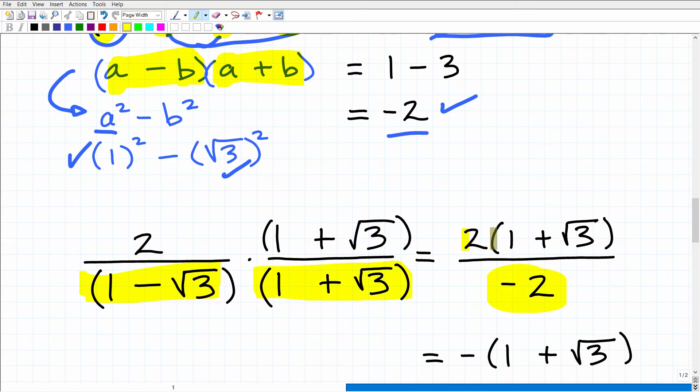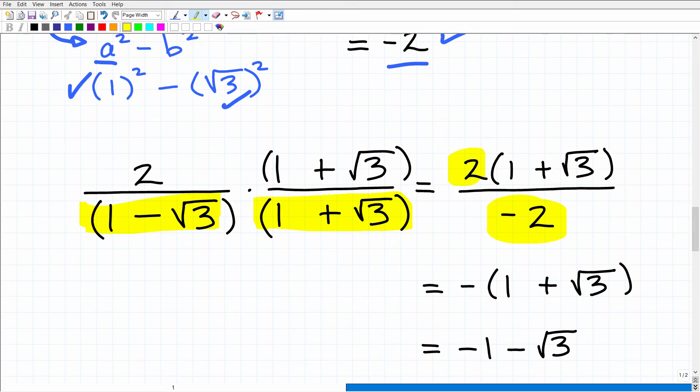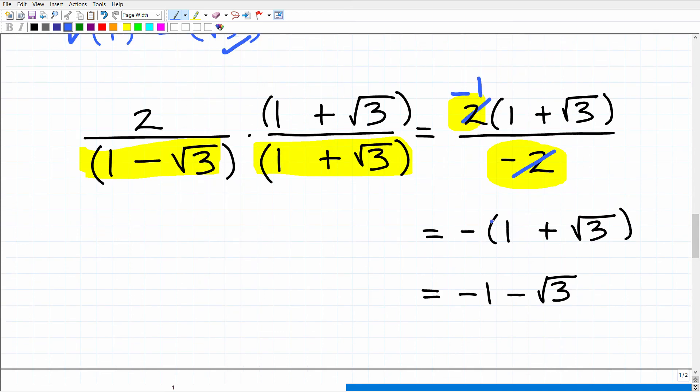Now that I know that the product of the denominators down here, these two binomials, is negative 2, I have 2 times 1 plus the square root of 3. But right here, this 2, this is a factor. So I could just cross-cancel this 2 into this 2. And that leaves me with negative 1. So now I have negative 1 times 1 plus the square root of 3. And then I can distribute that negative 1 there. So that leaves me with negative 1 minus the square root of 3. So this is the final answer.